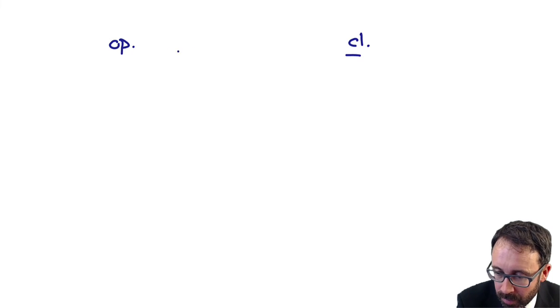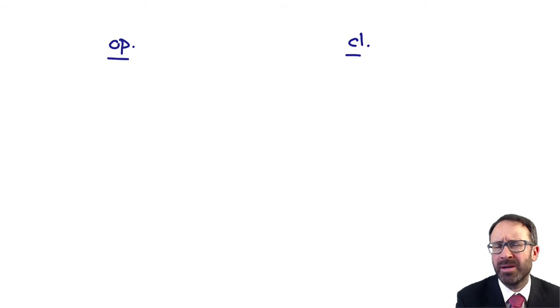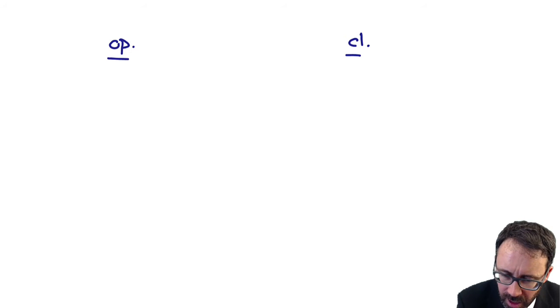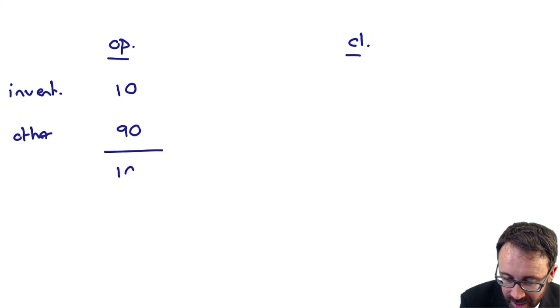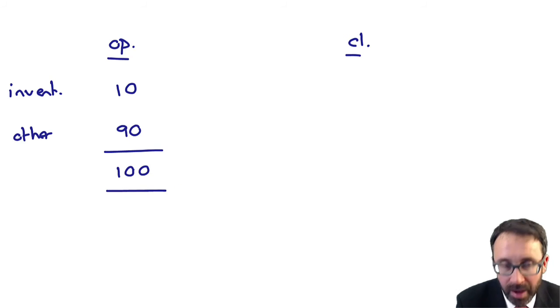If we think back to the numbers we had before, let's say opening capital of 100 with inventory of 10 and everything else at 90, that gives me my 100.